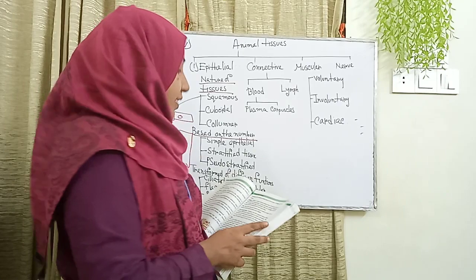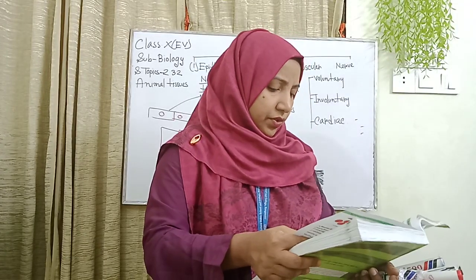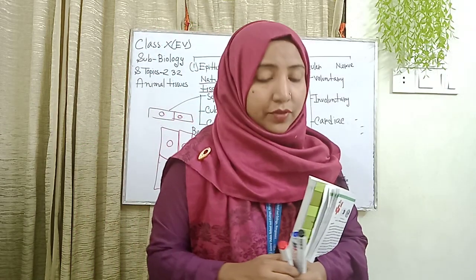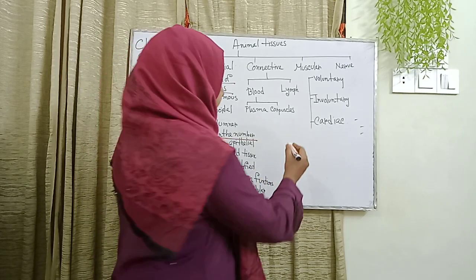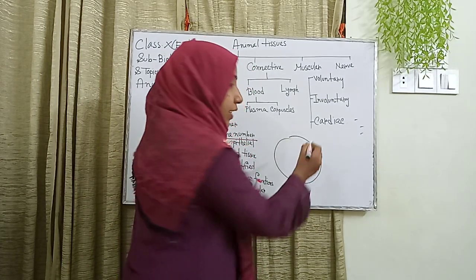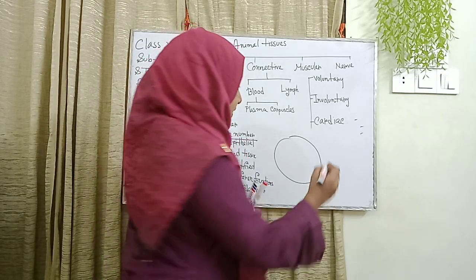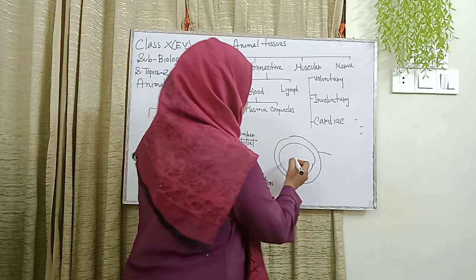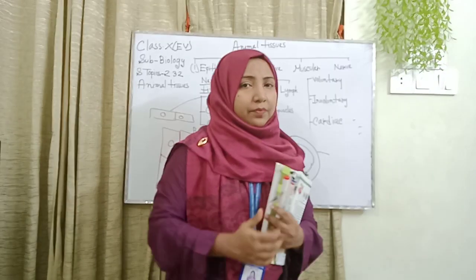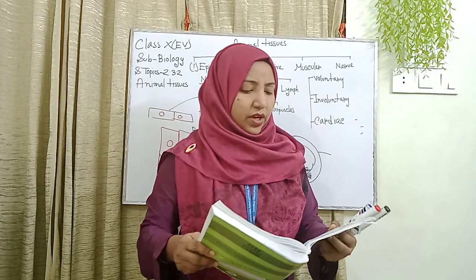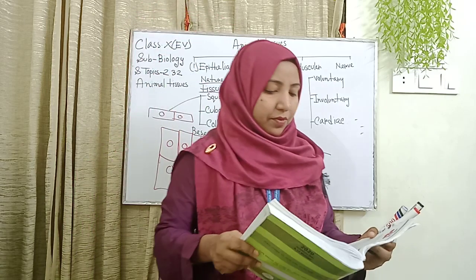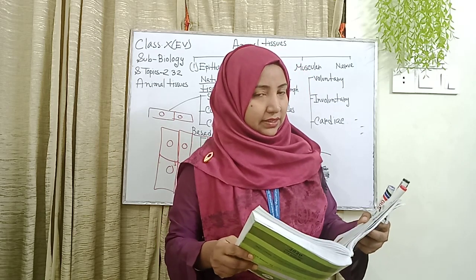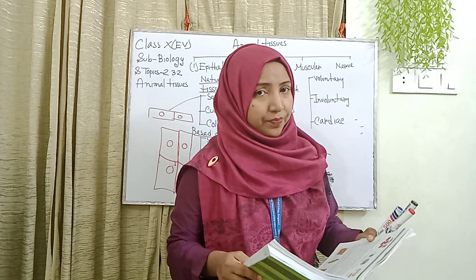Our third animal tissue is muscular tissue. Muscular tissue grows from the mesoderm. The embryo has three layers: the first is ectoderm, the second is mesoderm, and the third is endoderm. Muscular tissue grows from the mesoderm of the embryo. The particular type of tissue capable of contracting and expanding to affect movement, and which forms the muscles of vertebrate animals, is called muscular tissue.